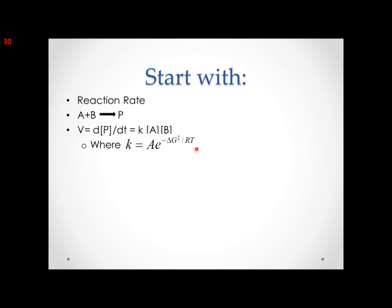This expression here is trying to show that this rate constant K has within it this term, delta G double cross, which signifies the amount of activation energy needed for this reaction to start. So within the K term is the activation energy.